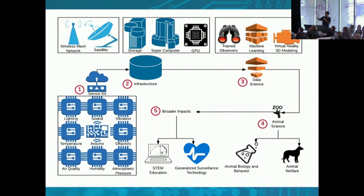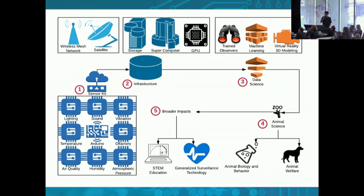Steps four and five — which we haven't reached yet — involve doing better animal science, understanding people's behavior, and developing a generalized surveillance technology for settings such as ICUs and home care where people are living alone and require assistance. We also aim to foster STEM education: since children are very interested in animals and zoos, we hope to use this as a mechanism to engage them in citizen science and provide STEM pathways.